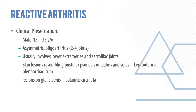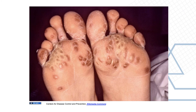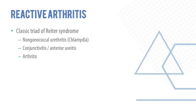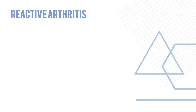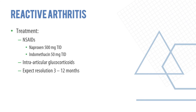Pustular psoriasis on the soles is a classic finding. The classic triad to remember is non-gonococcal urethritis, anterior uveitis, and arthritis. Reactive arthritis most commonly follows gastrointestinal infection with Shigella, Salmonella, Campylobacter, or Yersinia. Importantly, the infection precedes the arthritis by about two to six weeks. Treatment is anti-inflammatory medications such as naproxen or indomethacin, intra-articular glucocorticoids, with resolution expected in three to twelve months.